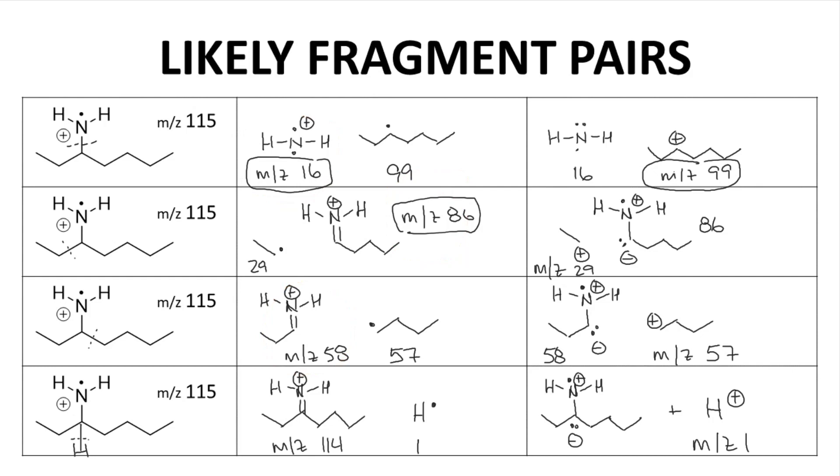Note that from the original molecule, you might expect that a methyl group would be possible. This molecule does have two methyl groups, but based on the position of the radical cation, we actually wouldn't predict loss of a methyl group.